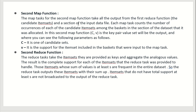The second map task takes all output from the first reduce function and a section of the input data file. Each map task counts the number of occurrences of each candidate item set among the baskets in the section of the dataset it was allocated. In this second map function, (c, b) is the key-value pair output, where c is the candidate item set and b is its support count.